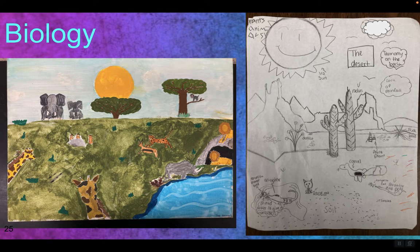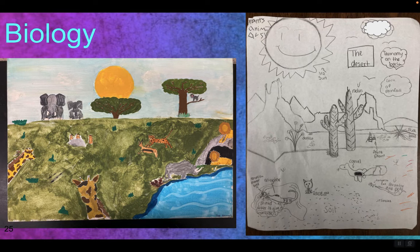In biology, if you have standards around biomes, kids have to represent and explain important aspects of their biome. One kid liked to paint, so they brought in a little canvas and painted their biome. A bunch of kids liked to draw. One said 'I don't draw a good camel,' and I said that's okay — but those cacti are awesome, those mountains, oh my gosh. They all had to explain what and why for the things they put in their work.